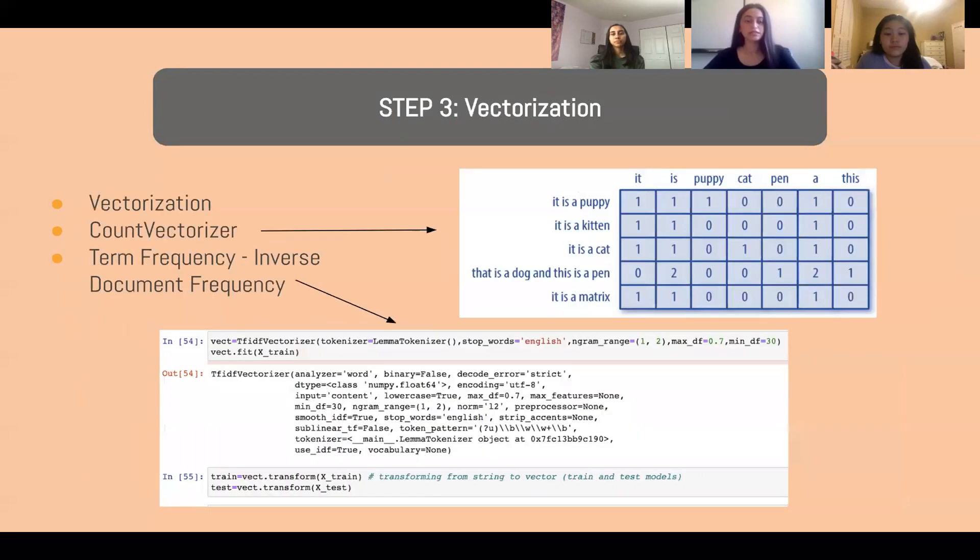And step three is vectorization. So after we turn our phrases into individual words, we counted the frequency that these words had in specific sentences and in the data as a whole. So through vectorization and count vectorizer, which you can see on the right, we found a term frequency, inverse document frequency, which combines both of those frequencies to find how often words were coming up in our data set.